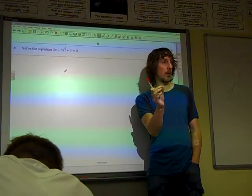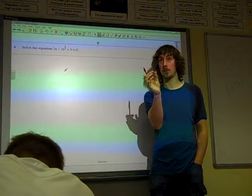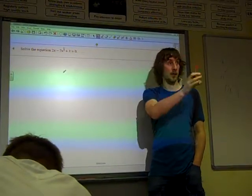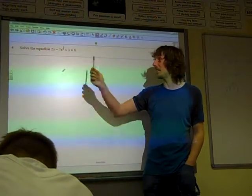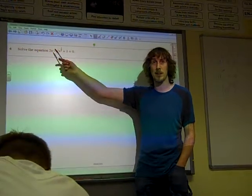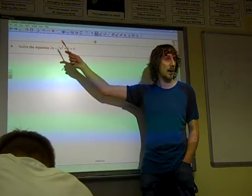Now the smaller power is the middle term, and the one that's twice it is the squared term. And this is kind of a classic one, because your squared term is just a single x, and that can be confusing.